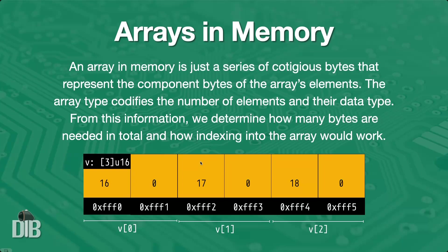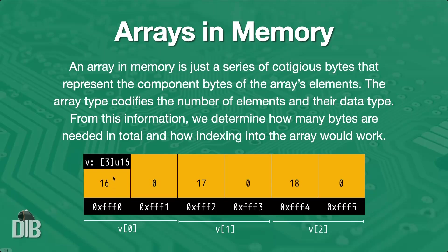Last but not least, we saw in the previous video how we can define and use arrays in Zig — well, this is how an array looks in memory. The binding here is v, an array of three u16s. Each u16 is 16 bits, divided by 8 that's two bytes. Here we have the little-endian representation of 16 in two bytes: a 16 and a zero. If we initialize with 16, 17, and 18, the second element is 17 and 0, and the third is 18 and 0. The addresses increment one byte at a time, and all we need is this first base address and the data type, which tells us we have three elements each requiring two bytes — six bytes total.